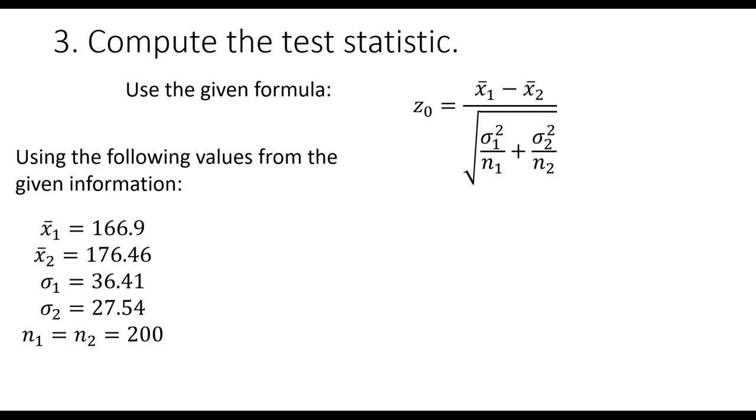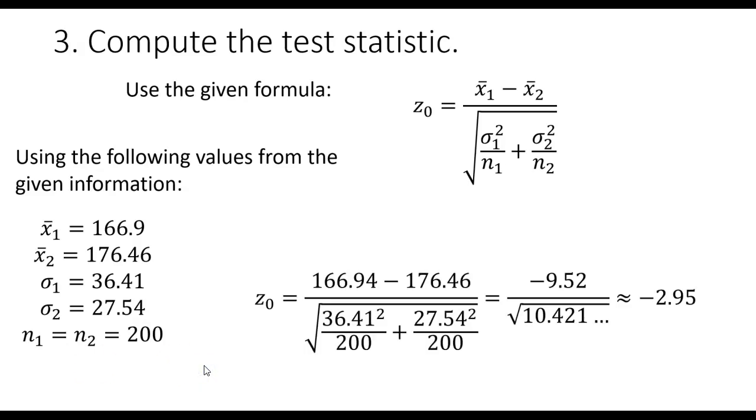They give you the population standard deviations, as well as the sample size. Notice the sample size for both 2015 and 2018 are both 200. So n sub 1 equals n sub 2, because they both equal 200.